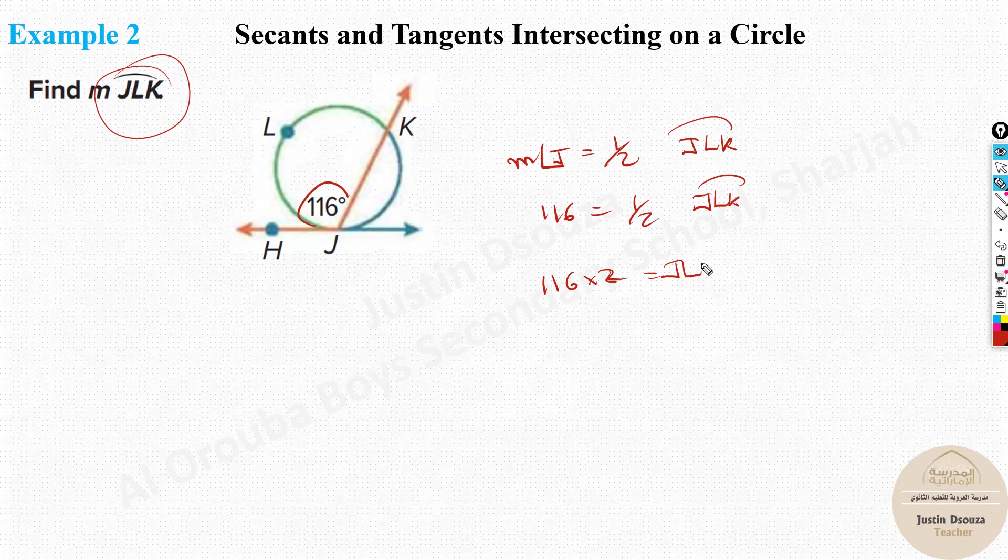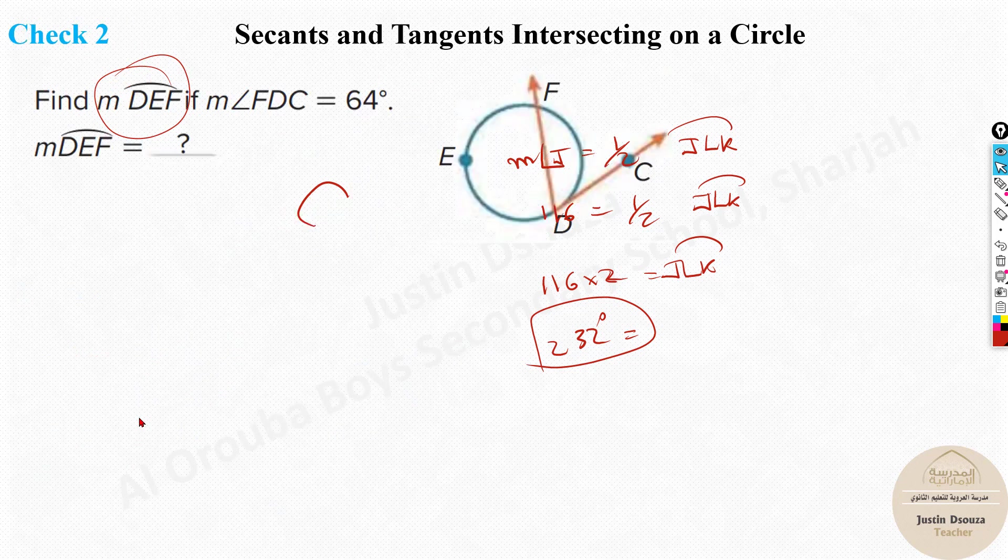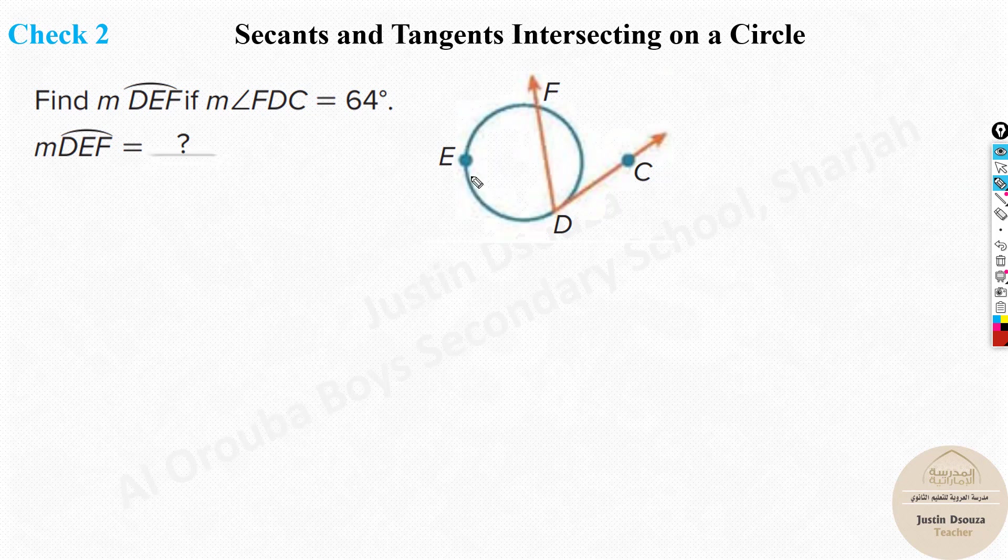And you can just times this, it will be 200 and 16 times 2 is 32, 232 degrees. So this would be the answer for the arc JLK. So this is how we solve it directly. And there's another check problem. Please do try to do it by yourselves.